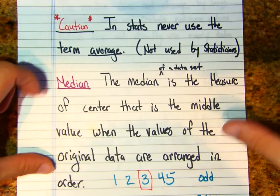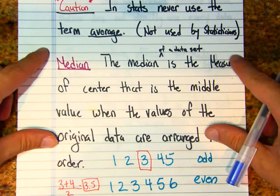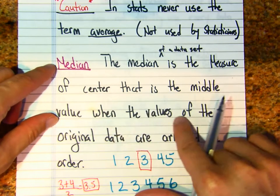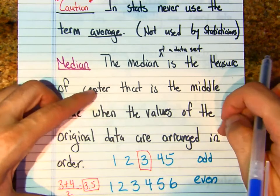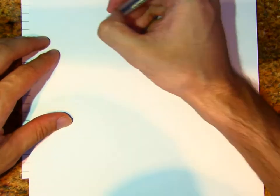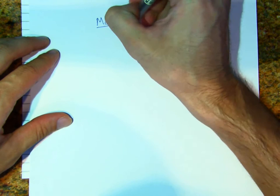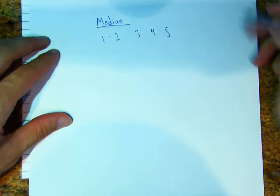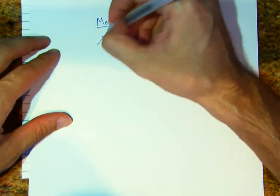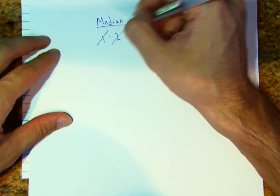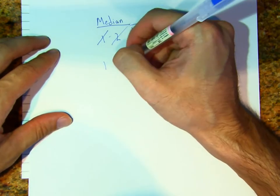The median is a measure of center that is the middle value when the values of the original data are arranged in order. For example, if I have the data values 1, 2, 3, 4, 5 and I want to find the median, I play the game of crossing one from the left, one from the right, and notice that the median is 3.